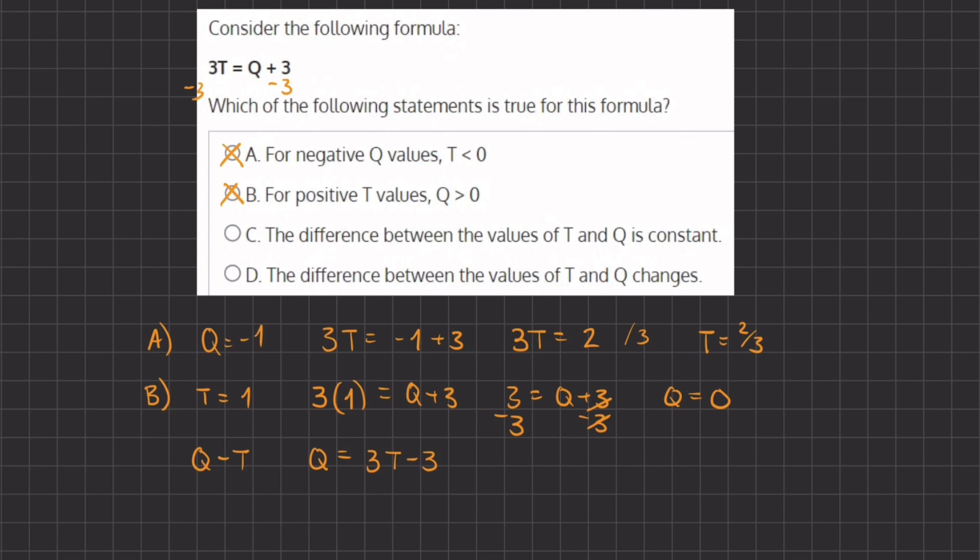Now if we plug this value of Q back into the difference between Q and T, we have 3T - 3, that was Q, and now we have minus T. So if we examine the difference between them,